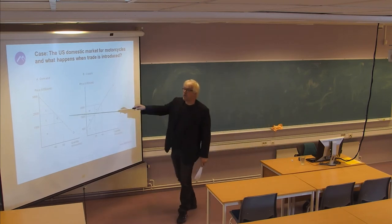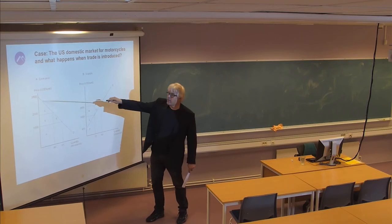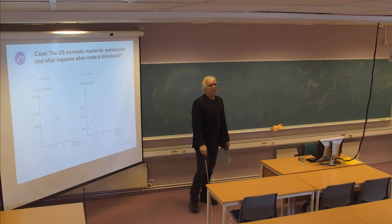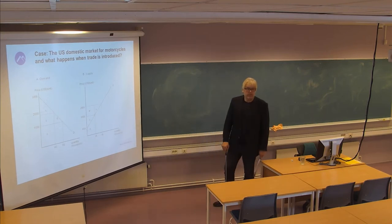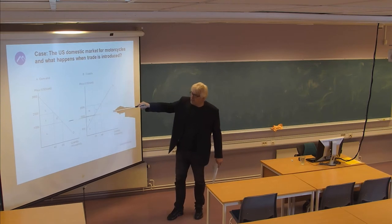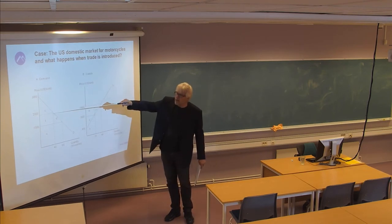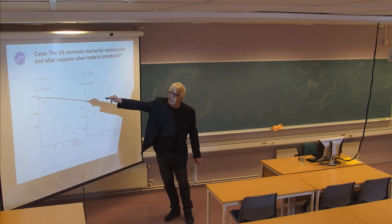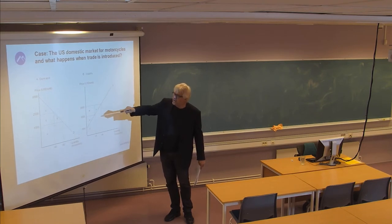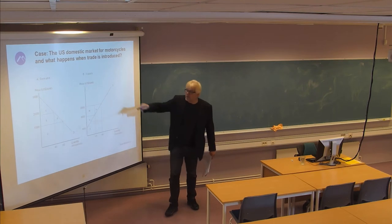This is a nice straight line — the market demand for this type of commodity. According to this, you are not able to sell more than perhaps one motorcycle at a price of $3,600. But you can sell 40,000 at a price of $2,000, and you can sell 65,000 at a price of $1,000. So it's a downward sloping curve.